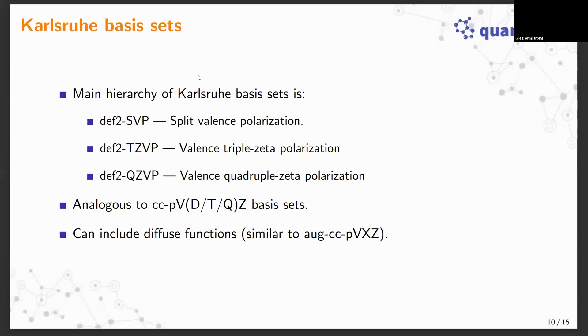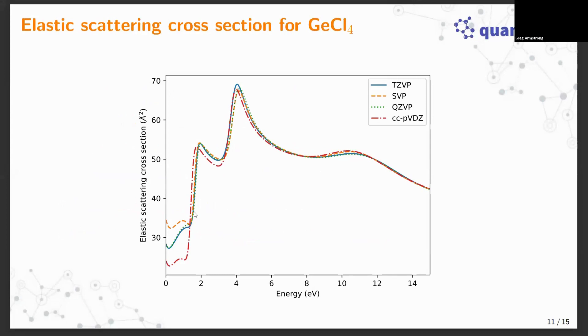What exactly are these basis sets? They have a hierarchy similar to the Dunning basis sets. They're given this prefix def2, they originate from the Ahlrichs basis sets: SVP, TZVP, QZVP which are split valence polarization, triple and quadruple zeta polarization, somewhat analogous to the Dunning basis sets double, triple zeta et cetera and Pople as well. They can include diffuse functions like the augmented Dunning basis sets or the plus Pople basis sets.